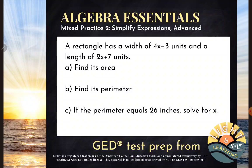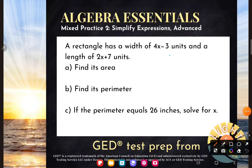So a rectangle has a width of 4x minus 3 units and a length of 2x plus 7 units. And you say, can they do that? They didn't really give me numbers. Yeah, they can give you an algebraic expression to represent the width and the length. And I'm just gonna label my rectangle like I usually would. So width of 4x minus 3 units, length of 2x plus 7 units.